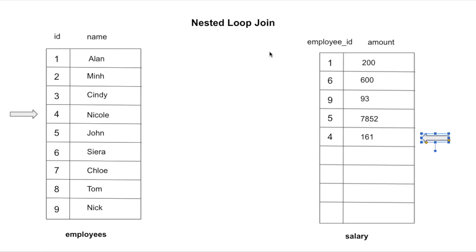That's how nested loop join works — it's a double for-loop: for every record in the employees table, compare it with every record in the salary table. This is done in a naive way. If the employees table has n records and the salary table has m records, the time complexity is O(m × n). This can be a bit faster if using an index on the join condition.